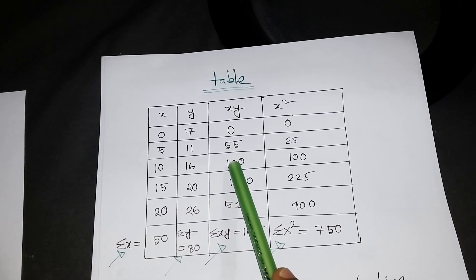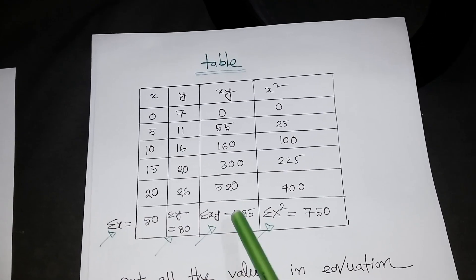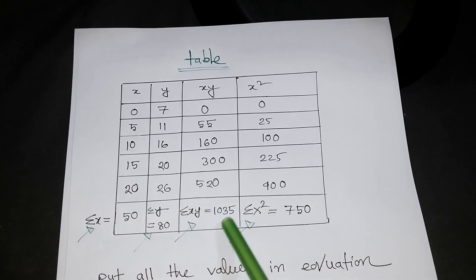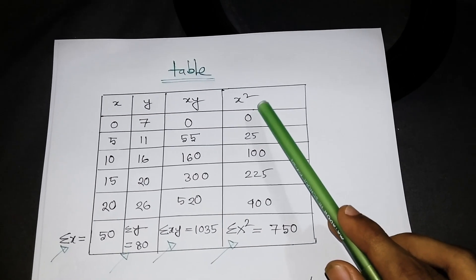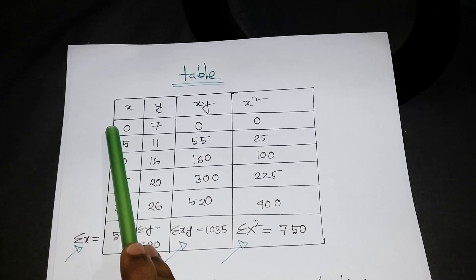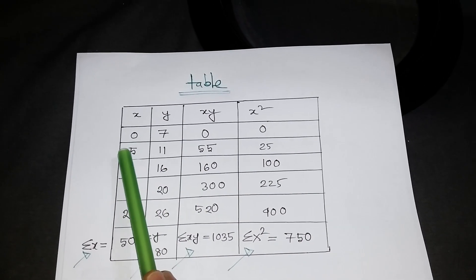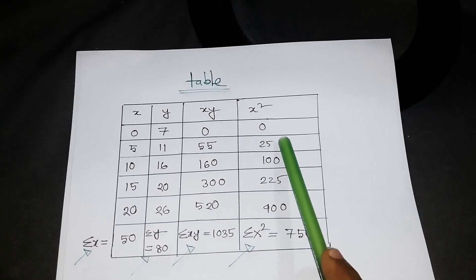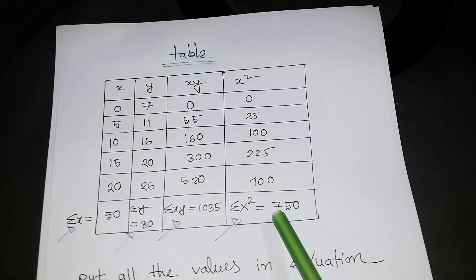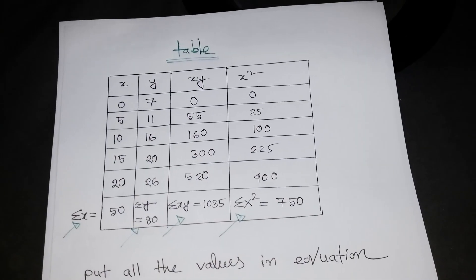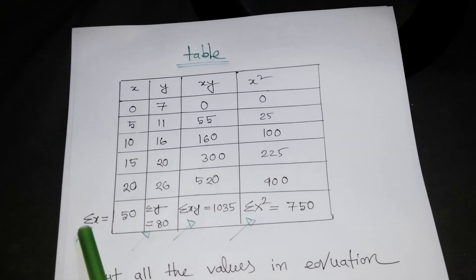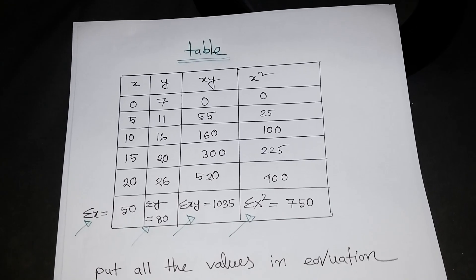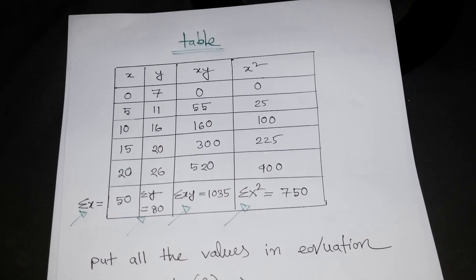For XY, we multiply each pair: 0×7=0, 5×11=55, and so on for all pairs. Summing all those products gives ΣXY = 1035. For X², squaring each X value gives 0, 25, 100, 225, 400, and summing these gives ΣX² = 750.